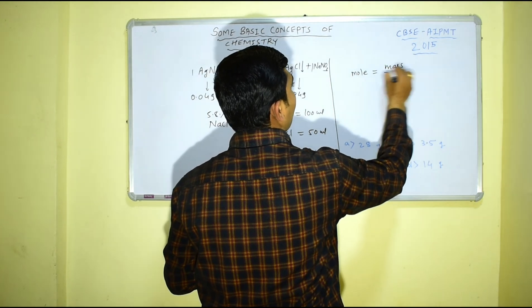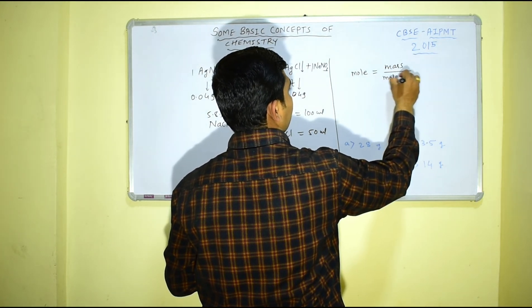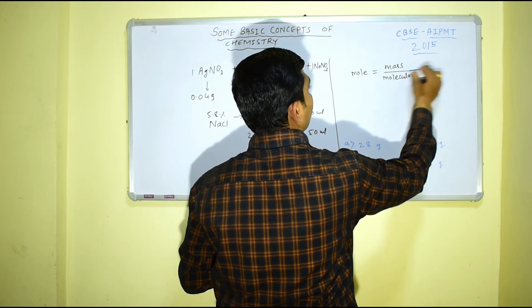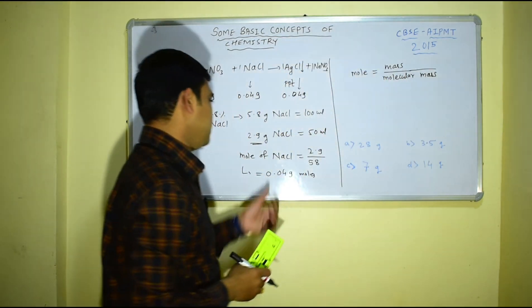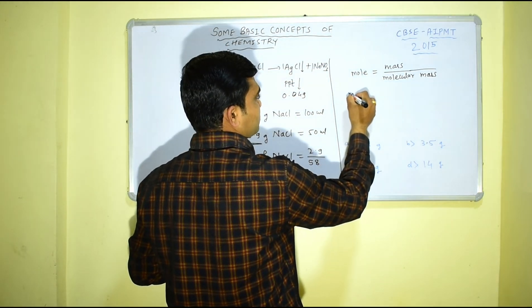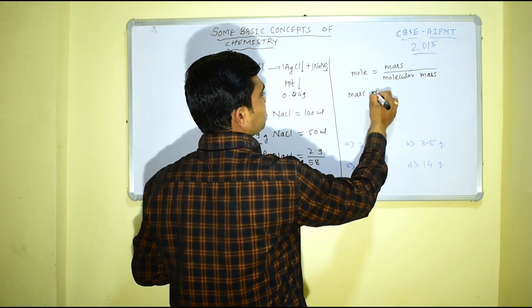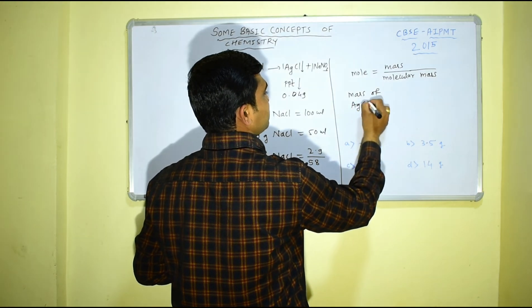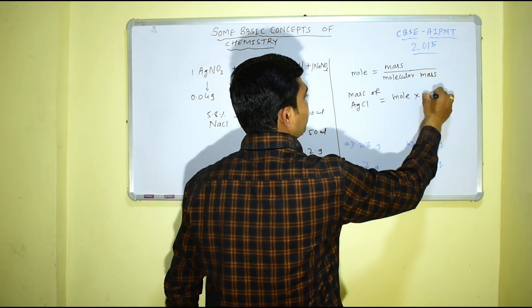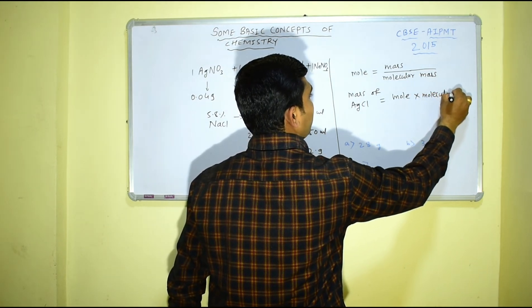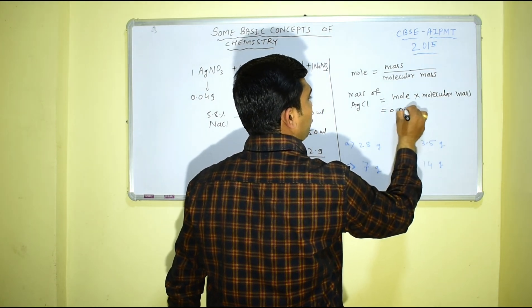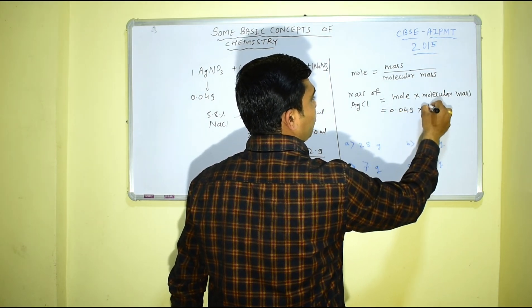So for AgCl we have to determine this, therefore mass of AgCl will be moles into molecular mass. We have determined mole that is 0.049 and molar mass will be 143.5.